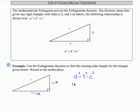So 12 squared is 144 plus 7 squared is 49 equals c squared. So when I add these two, I get 193 equals c squared.